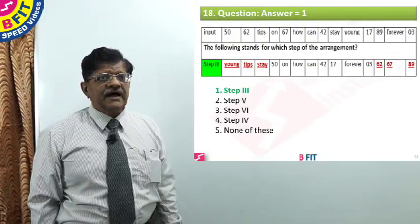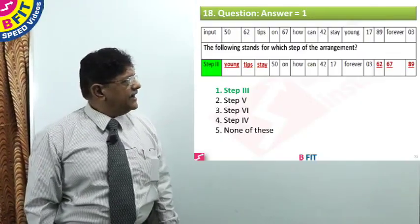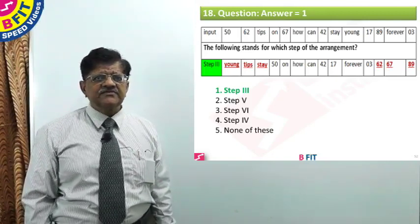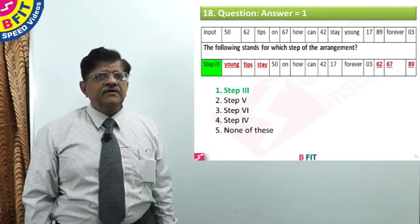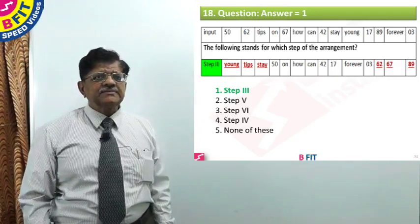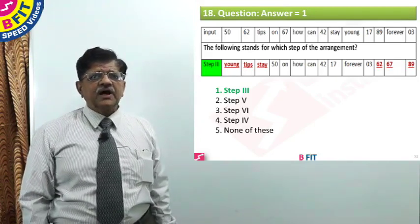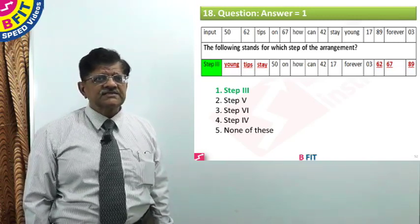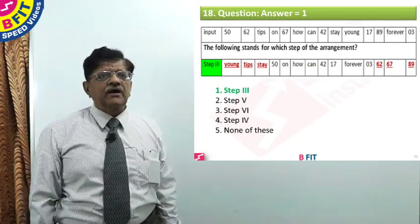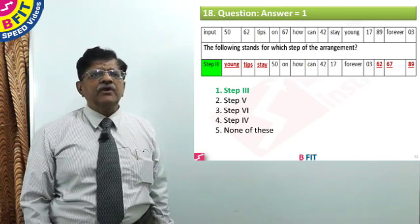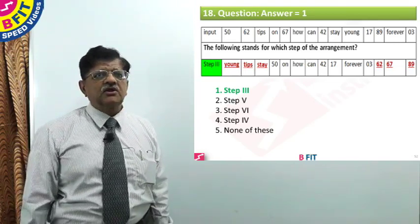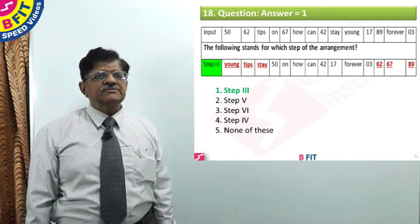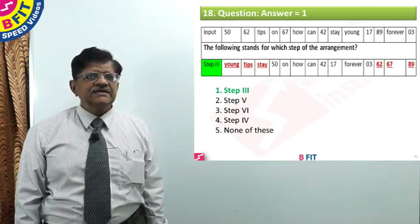For the given data, young, tips, stay — given in a different color — and 62, 67, and 89 in a different color. From that we know three steps have been completed and the other steps are yet to complete. Therefore, the answer for this question is step three. You don't have to work it out — by looking at it, you know three steps have been completed.